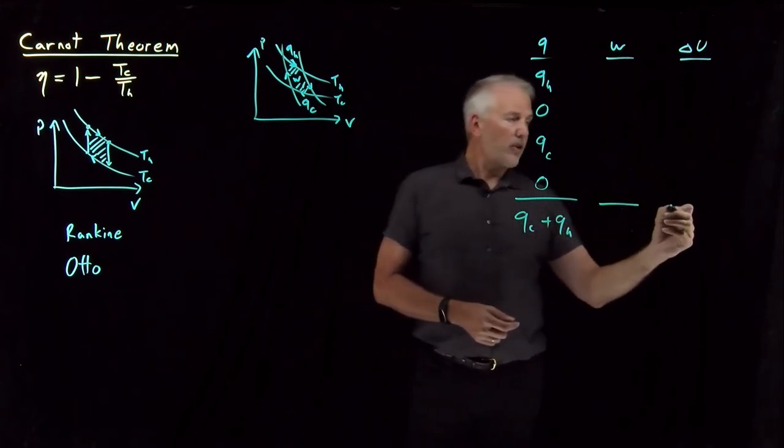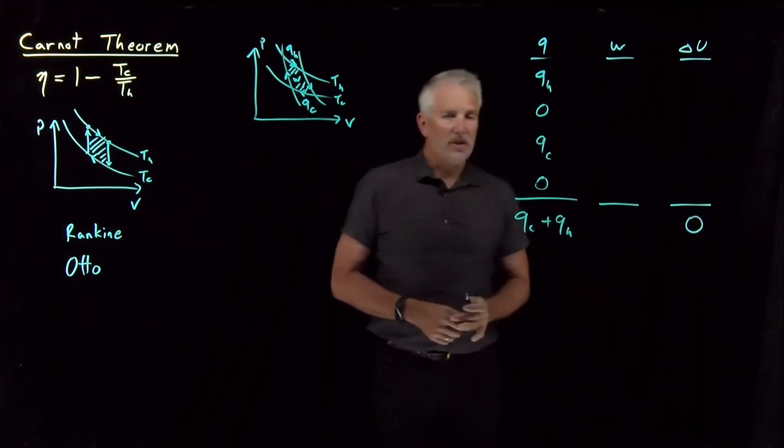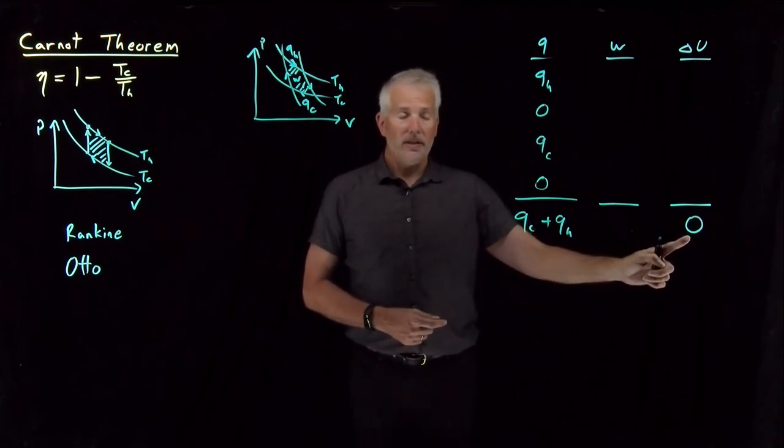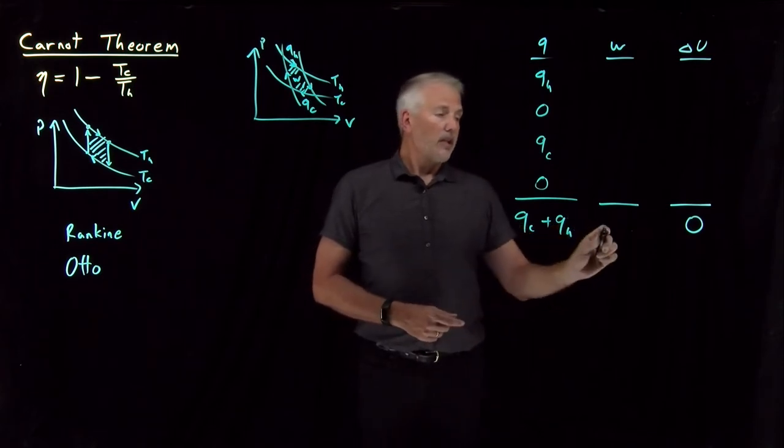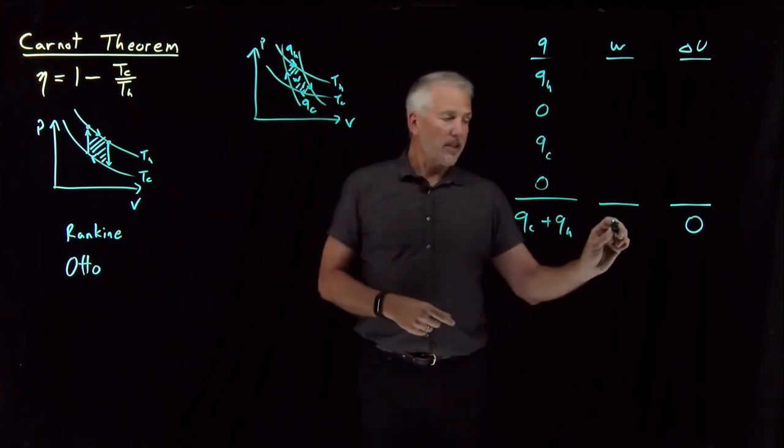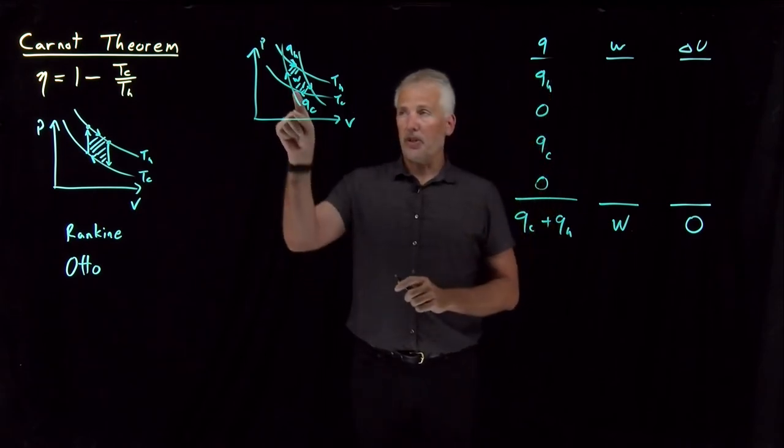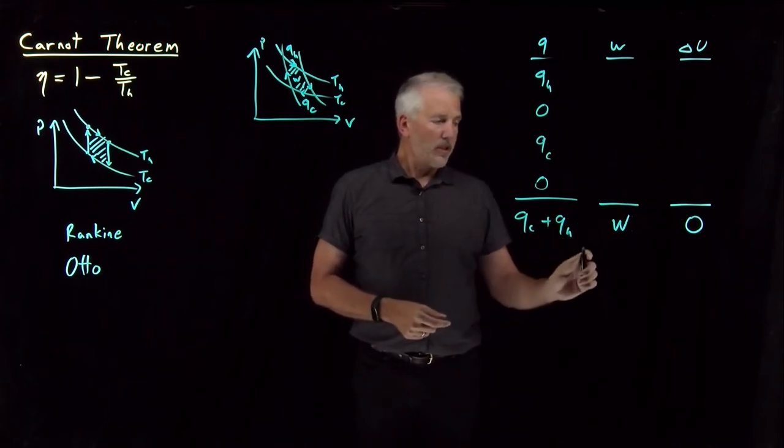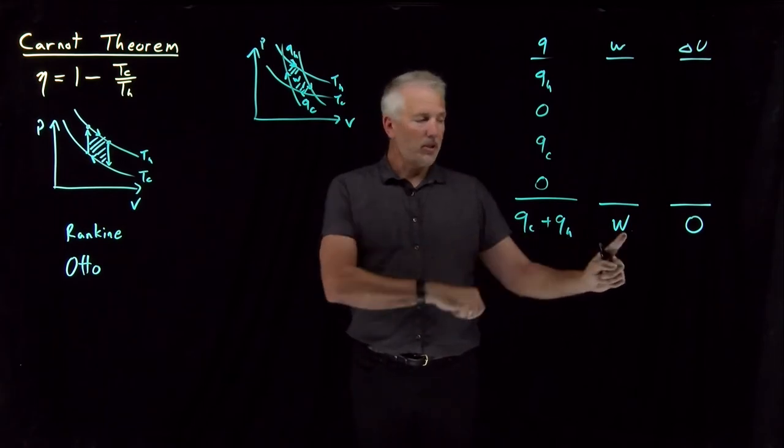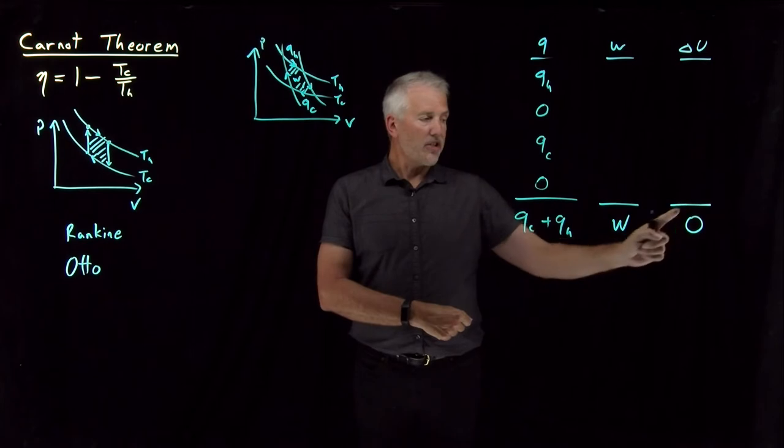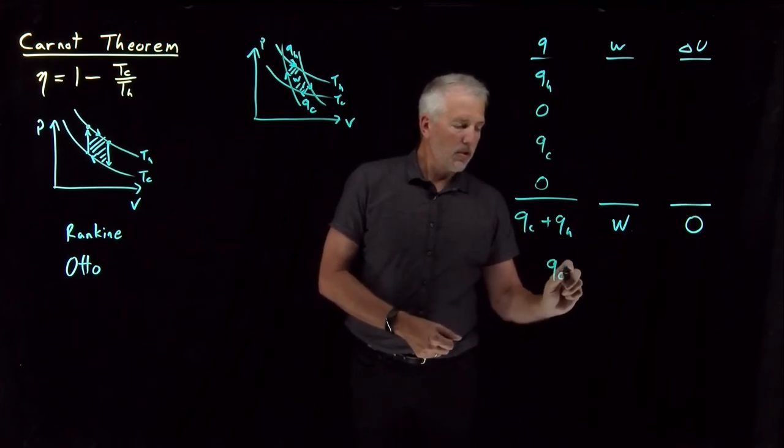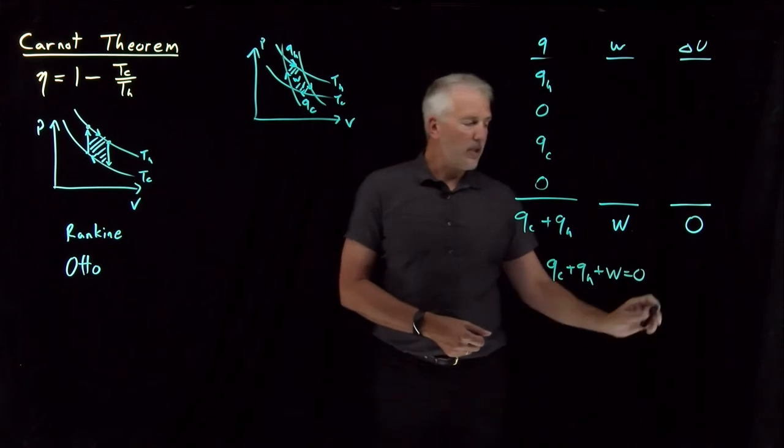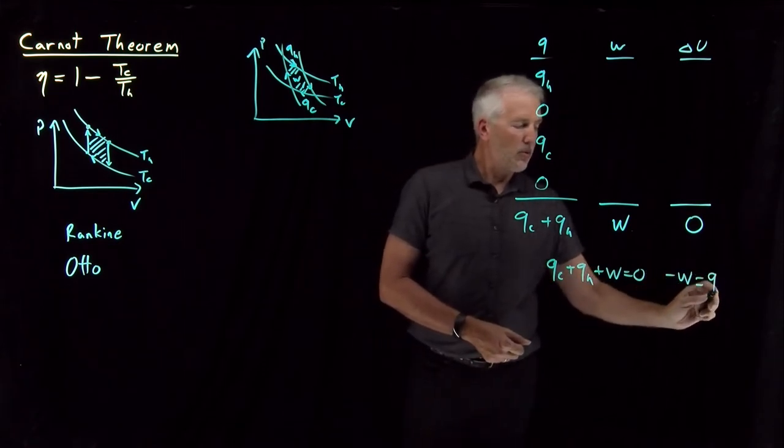I'm going to skip all the rest of the details of this diagram and just remind you that for a cyclic process, any cyclic process, whether it's a Rankine cycle or an Otto cycle, any cyclic process is going to have zero net change in the internal energy, because it's a state function. And the work done by this process, again, even if it's not a Carnot cycle, even if it's some other type of cycle, the work is the area enclosed by this diagram. So there's some total amount of work. So what this tells us, what the first law tells us, is these two amounts of heat plus that amount of work must add up to the net change in energy, zero. So Q cold plus Q hot plus work is zero. Or if I move the work to the opposite side of the equal sign, negative W is Q hot plus Q cold.